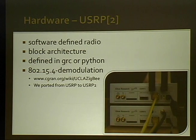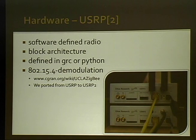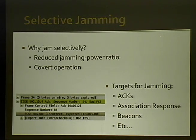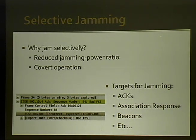Another hardware platform we've been working with is the USRP2. In a software-defined radio, components typically implemented in hardware — such as amplifiers and demodulators — are instead implemented in software on the host computer. You define signal processing blocks for handling incoming signals. This makes the USRP an RF Swiss army knife, which we've coupled with UCLA's 802.15.4 demodulation framework, ported to the USRP2 with the latest release of GNU Radio. We're using it for selective jamming — targeting specific transmissions or frames rather than continuous RF jamming — which uses less energy and allows covert operation.